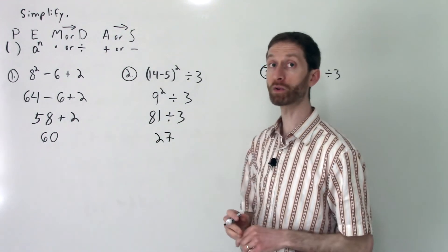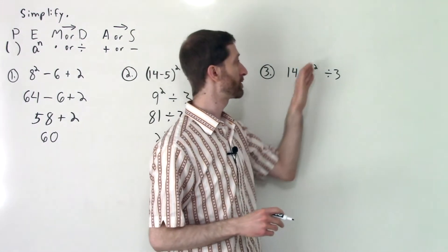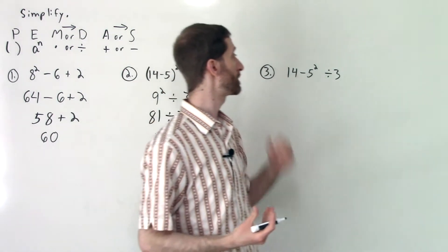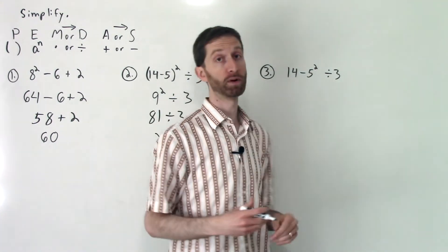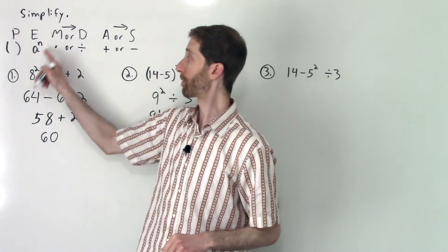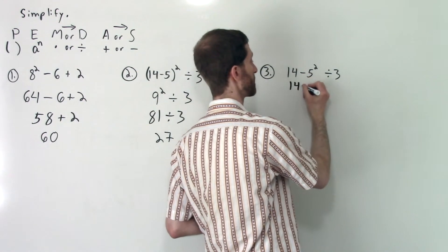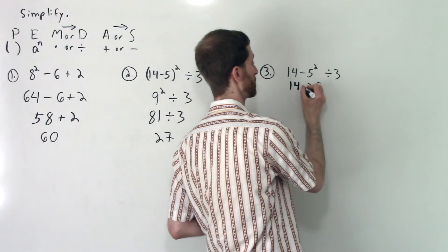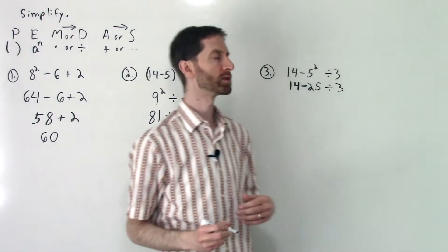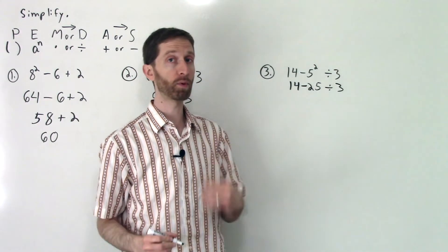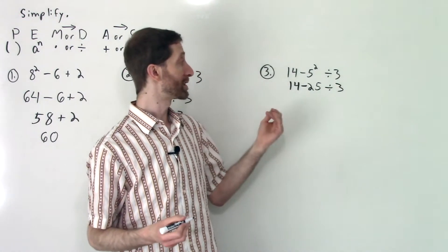So now in this next problem we'll see that those parentheses mattered quite a bit. You've got 14 - 5² ÷ 3. But in this case we're not doing the 14 - 5 first because there are no parentheses. So we need to do the exponent first. 5² is 25. That minus sign remains. Make sure you can see that well. So many errors happen when students don't copy everything else. Do one operation at a time and then copy the rest.